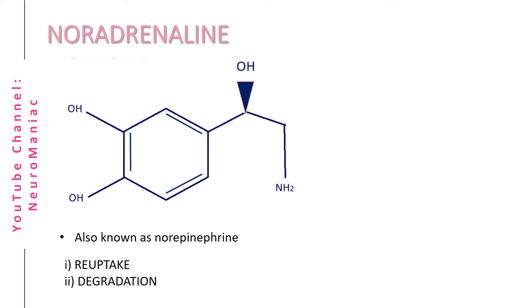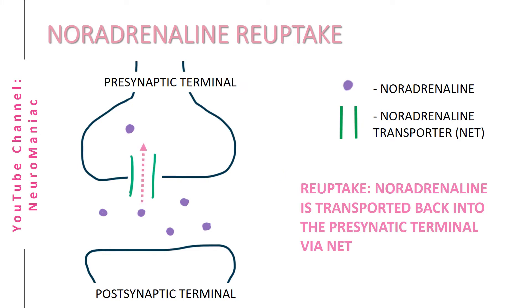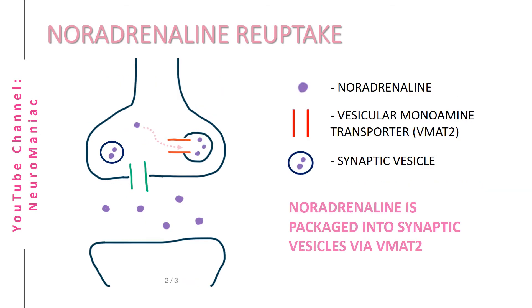Let's start off with reuptake. Extracellular noradrenaline is transported back into the presynaptic terminal by a high affinity transporter protein called the noradrenaline transporter. Once noradrenaline is in the intracellular space, it is repackaged into vesicles.